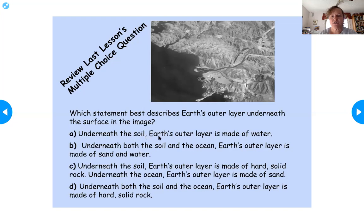So this says underneath the soil, earth's outer layer is made of water, which doesn't make sense because we know that it's hard solid rock. Here it says underneath both the soil and the ocean, earth's outer layer is made of sand and water. We also know that doesn't make sense. There are layers of sand and layers of water, but not underneath all of that.